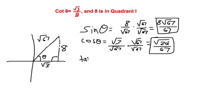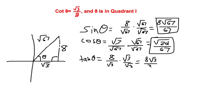Tangent of theta is opposite over adjacent, which is 8 over square root of 3. Rationalizing the denominator gives 8 times square root of 3 over 3. Cotangent of theta is already given to us: it's square root of 3 over 8.